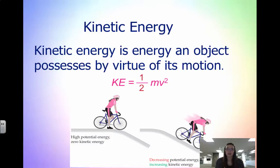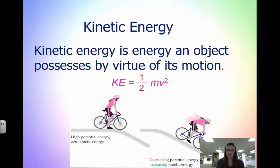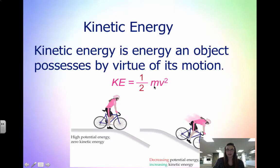Matter can possess energy in two different ways: kinetic energy or potential energy. Kinetic energy is the energy of motion. To calculate it, we have kinetic energy equals one half mv squared, where m is mass in kilograms and v is velocity in meters per second.